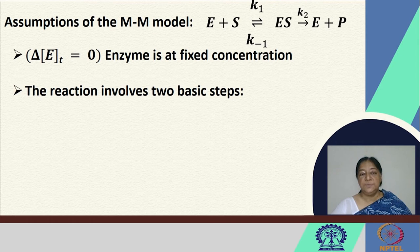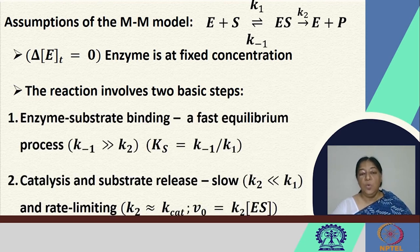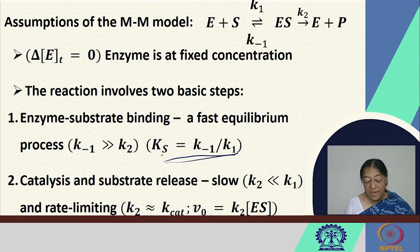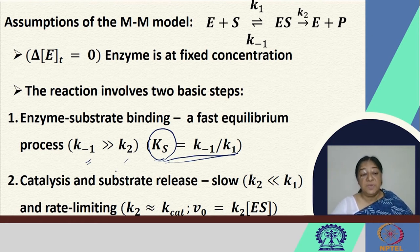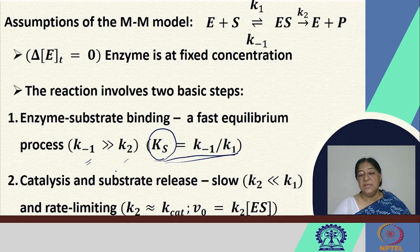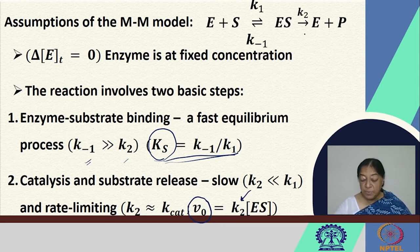The Michaelis-Menten model assumes the enzyme is at a fixed concentration and the reaction involves two basic steps. The first is a fast equilibrium process where K-1 is much larger than K2. The second step — catalysis and substrate release — is slow and rate-limiting, with K2 less than K1. The rate-limiting constant Kcat is associated with K2, and V0 equals Kcat times the ES concentration.